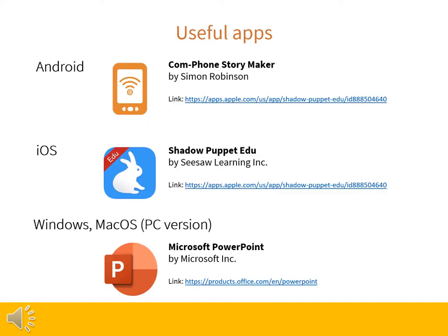So once you have got your story script, the next step will be to create your digital story. I've listed three easy-to-use applications for different platforms here. Note for PowerPoint users: you'll need to use the desktop version of PowerPoint — the browser and tablet or phone versions don't support all the functions needed to create a digital story. There are separate video and text tutorials available for each application. The tutorials provide step-by-step explanations of how to create a digital story using one of these apps and how to share the digital story with us afterwards.